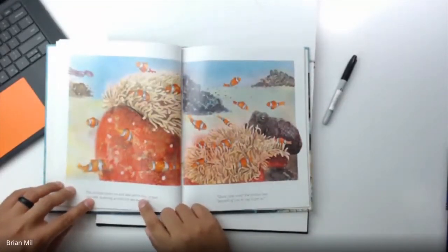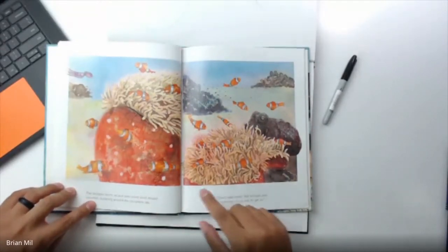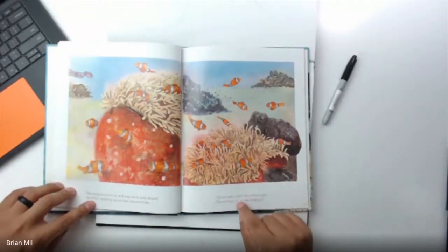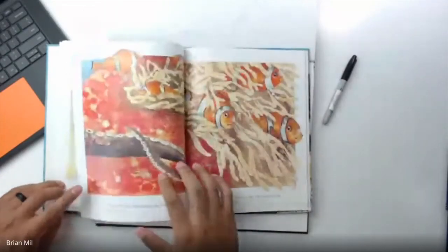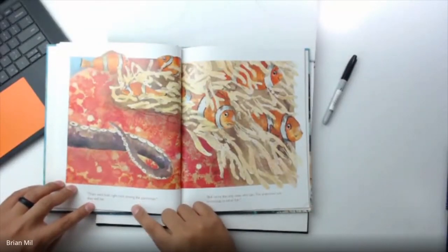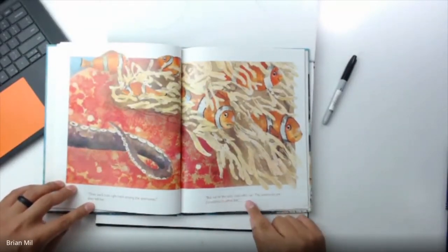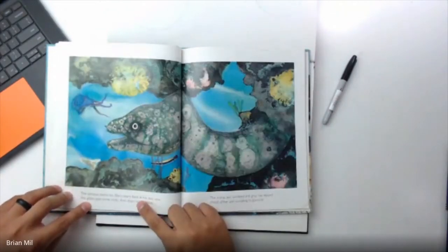The octopus swims on and sees some small striped clownfish clustering around the sea anemones. Quick, take cover, the octopus says, something's on its way to get us. Then we'll hide right here among the sea anemones, they tell her. We're the only ones who can. The anemones are poisonous to other fish, just like what we saw in Finding Nemo.